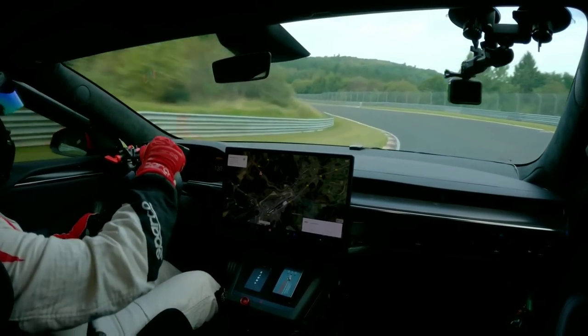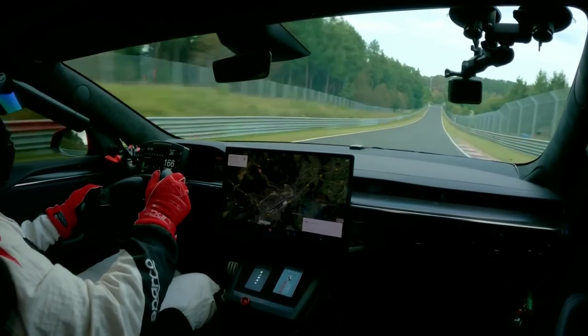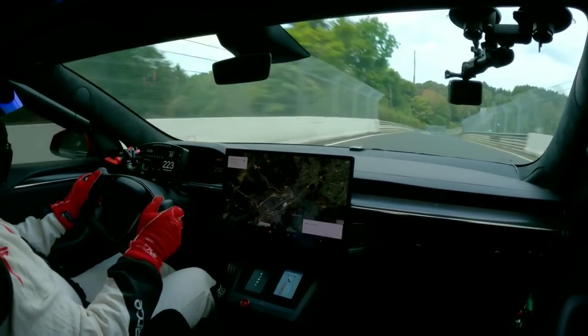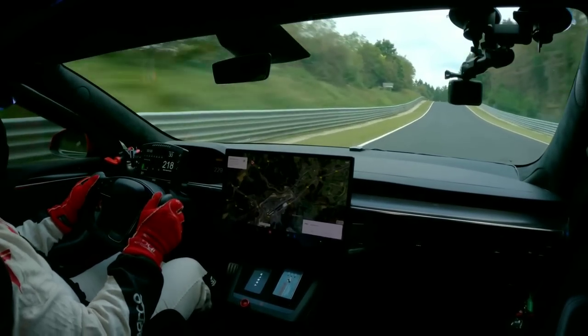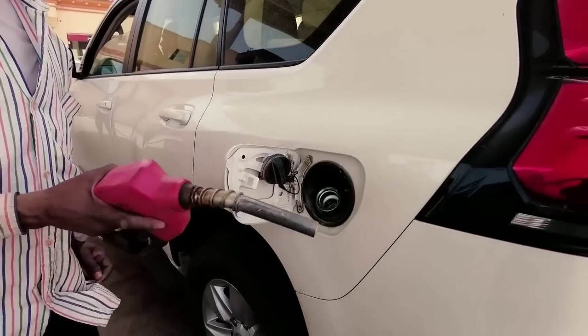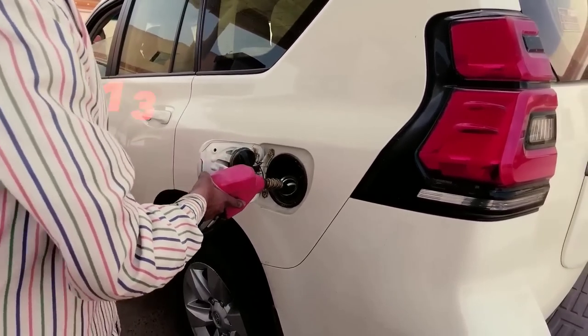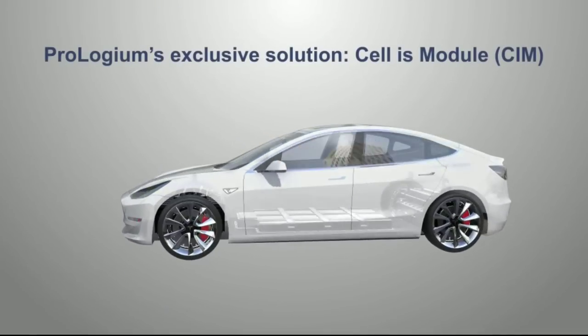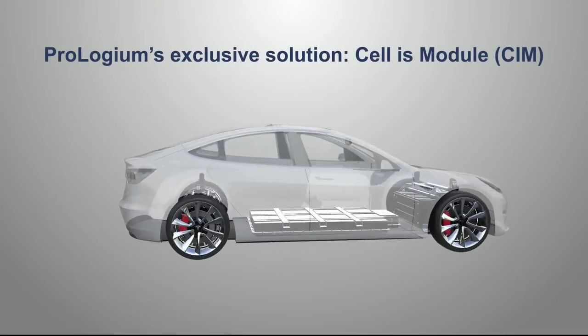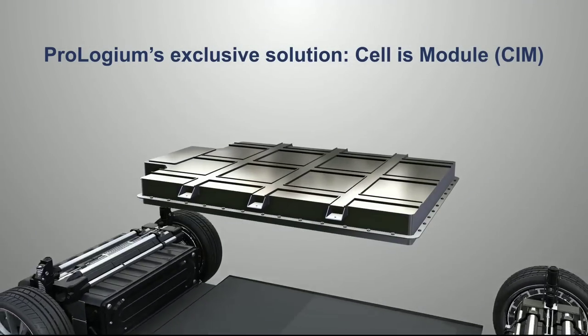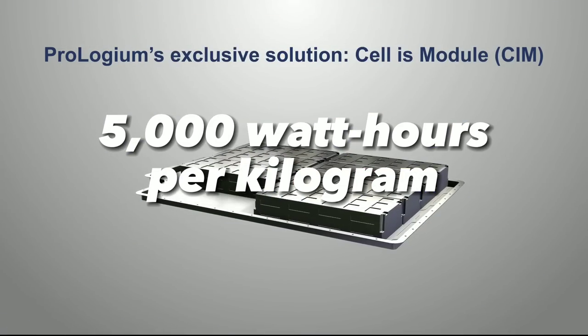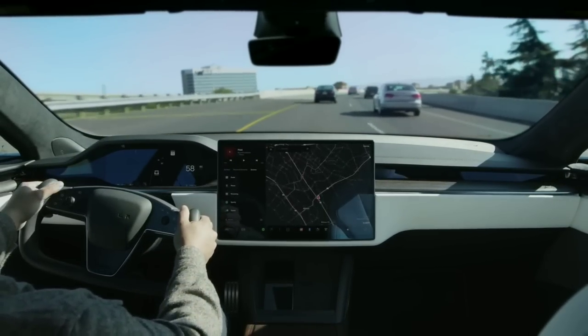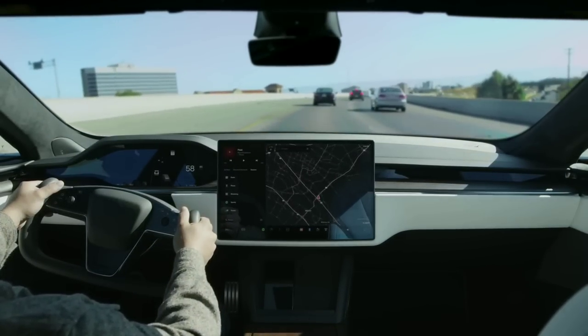So what does this breakthrough mean for the future of electric vehicles and energy storage? Well, it means that we are one step closer to achieving the ultimate goal of lithium air batteries to match or surpass the energy density of gasoline. Gasoline has an energy density of about 13,000 watt hours per kilogram, which is still much higher than any battery technology available today. However, if we can increase the energy density of lithium air batteries to around 5,000 watt hours per kilogram, which is theoretically possible, then we can achieve a similar range in performance as gasoline powered vehicles.